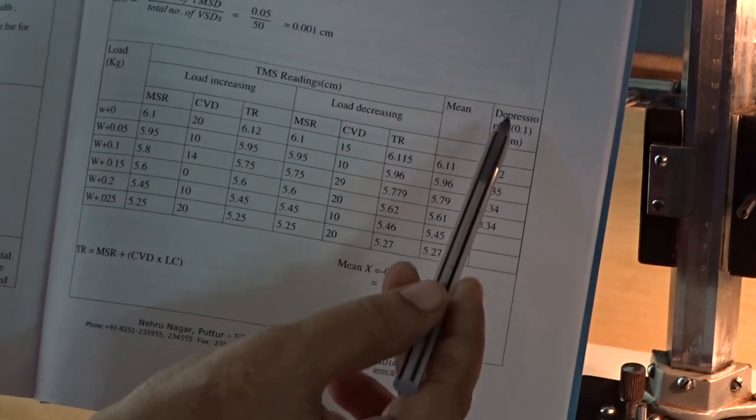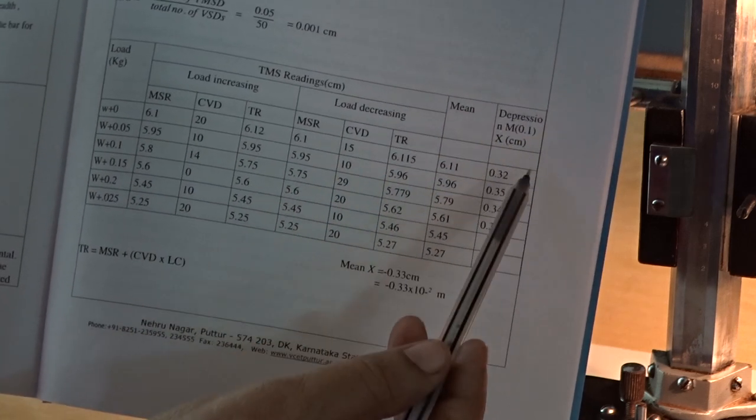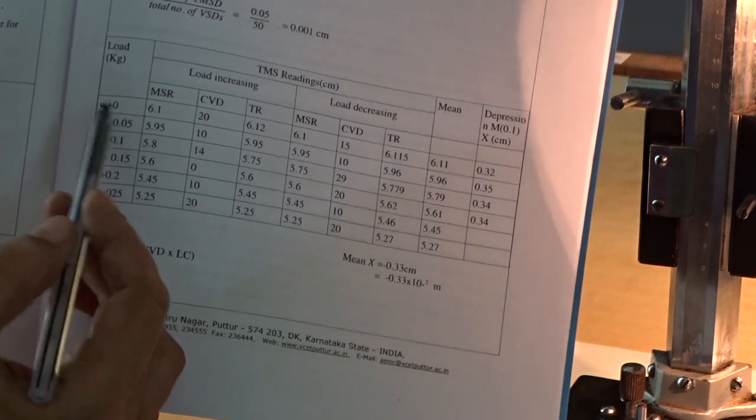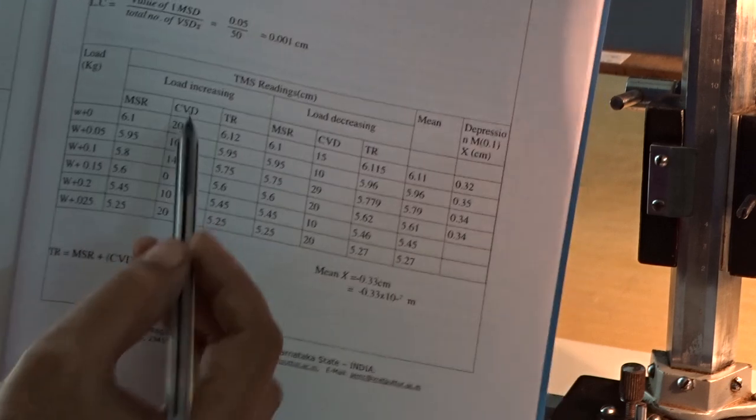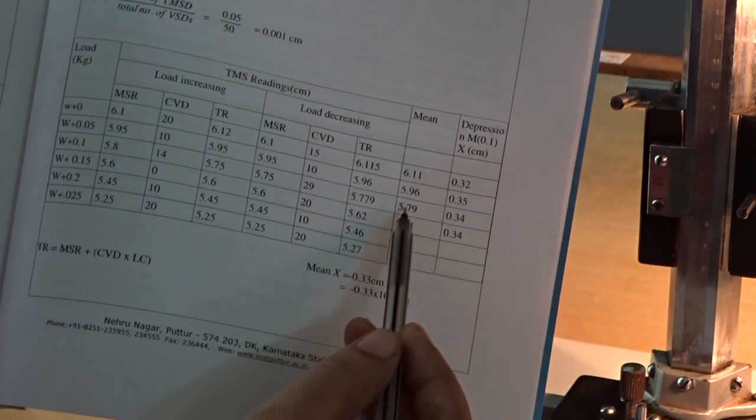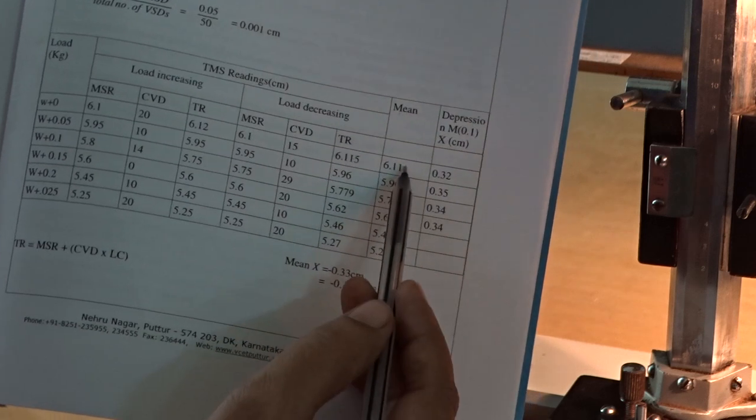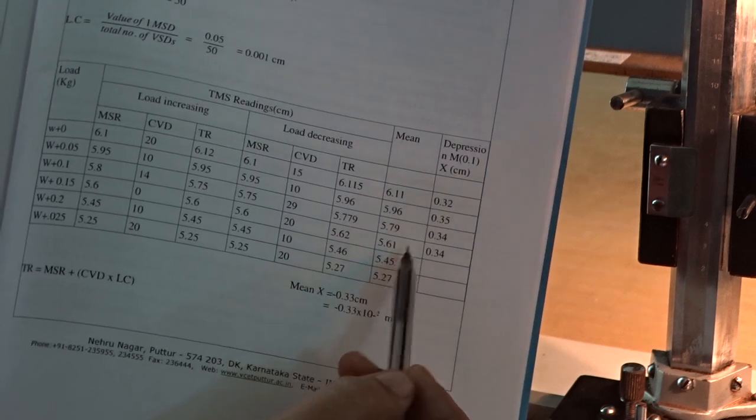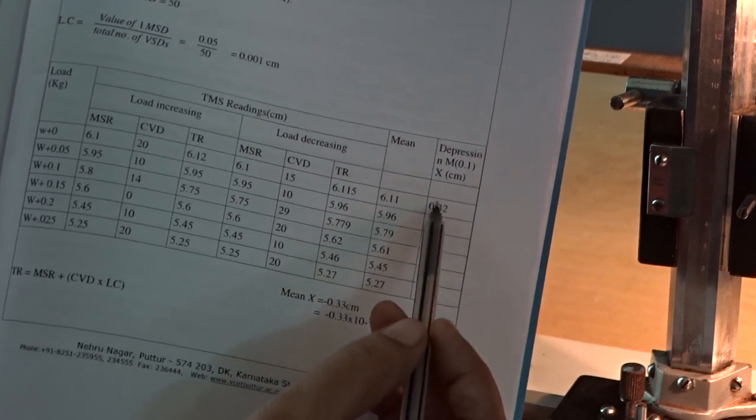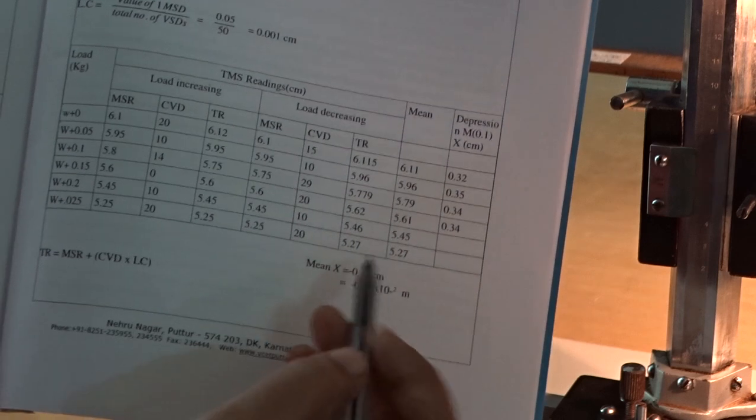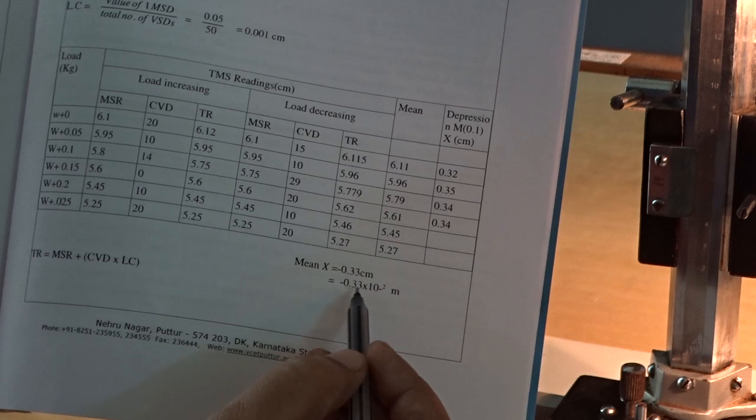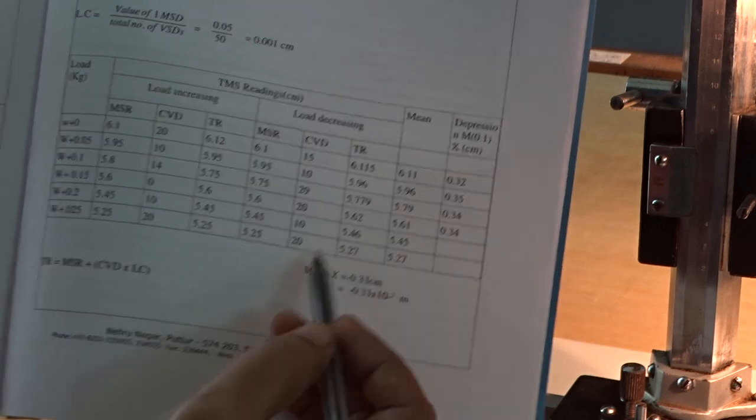Last column is for depression. Depression is taken for mass of 0.1 kg. If you consider W plus 0, W plus 0.1, if you subtract this, you get 0.1. So, corresponding readings, 6.11 and 5.75. Subtract these two readings, alternative readings, you get 0.32. Similarly, subtract alternative readings, you get 4 more readings here. Total 4 readings in the depression column. Take mean of that, you get 0.33 into 10 power minus 2 meter. This is a depression in the cantilever beam.